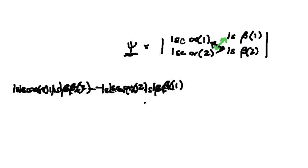So now let's say we have 1s alpha 2, 1s beta 1, minus 1s alpha 1, 1s beta of 2